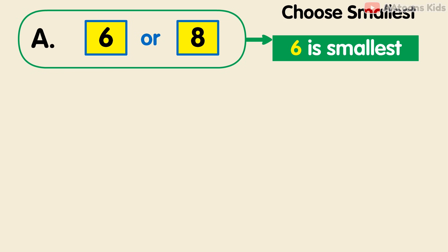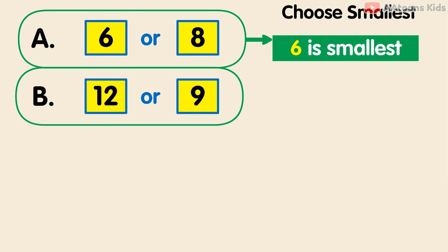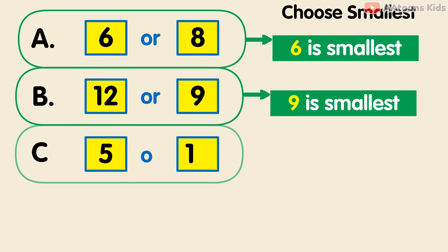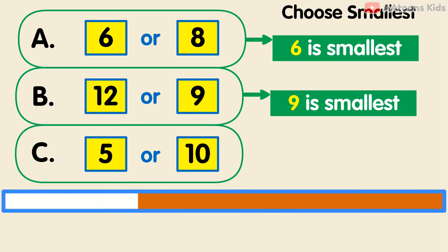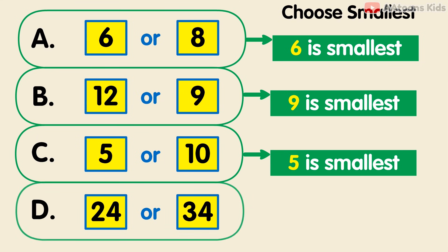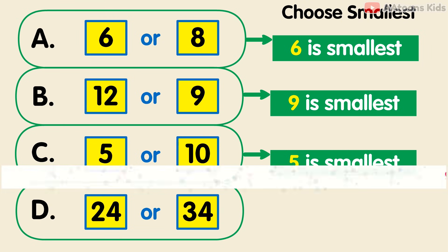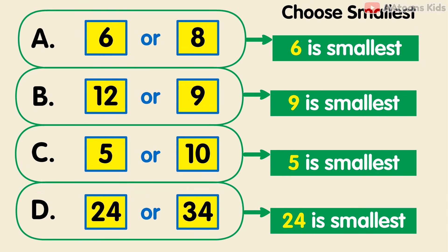6 is the smallest number. 9 is the smallest number. 5 is the smallest number. 24 is the smallest number.